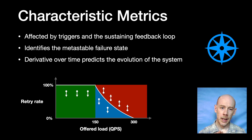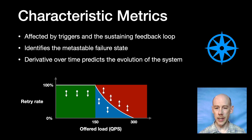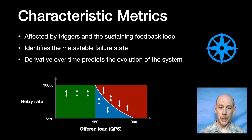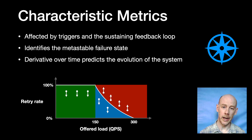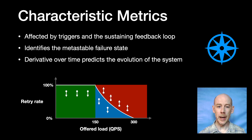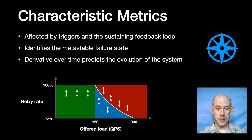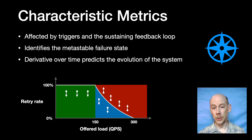In the green stable region below 150 qps, the retry rate will drop over time no matter what the current retry rate is, as long as there's no external trigger. Between 150 and 300 qps, the evolution of the characteristic metric depends on its current value — if it's low, it will get smaller; if it's too high, the feedback loop will push it even higher. The boundary between the blue vulnerable region and the red failure region is the critical point at which the feedback loop becomes self-reinforcing. A map like this is useful during testing to stress all the possibilities that might fail in production, and in production it can tell us when we're about to go outside the safe region.